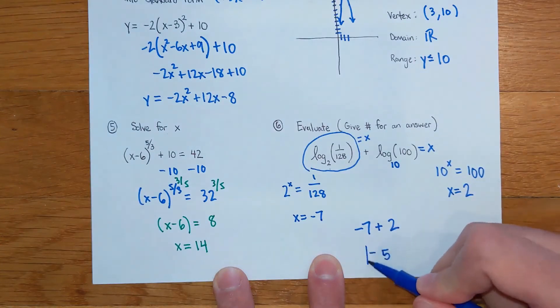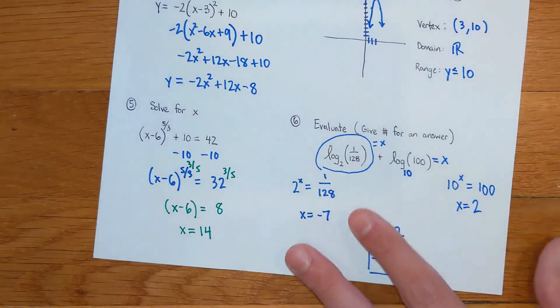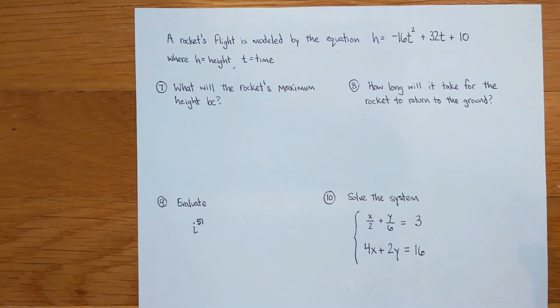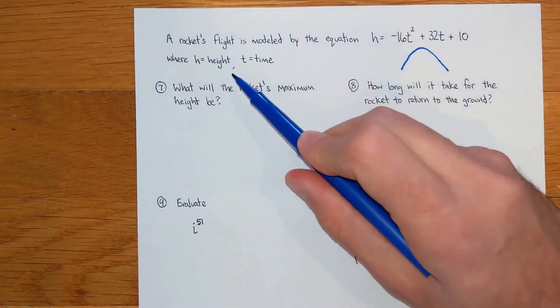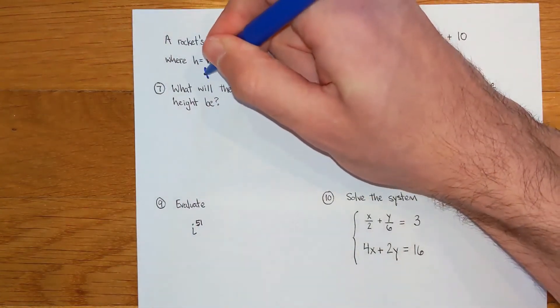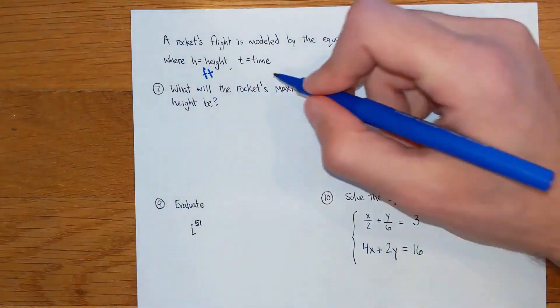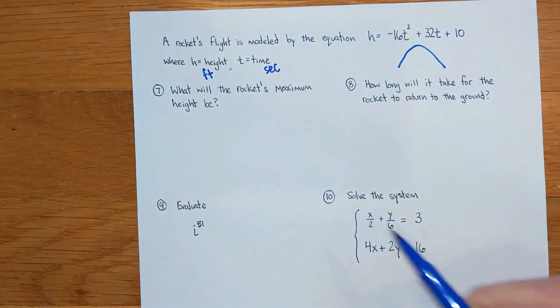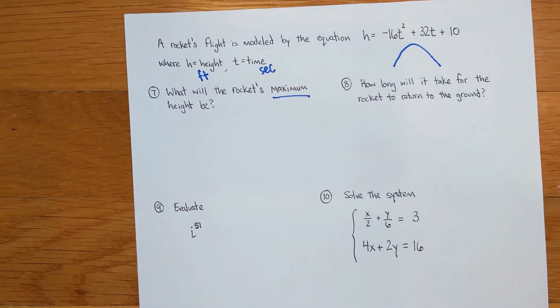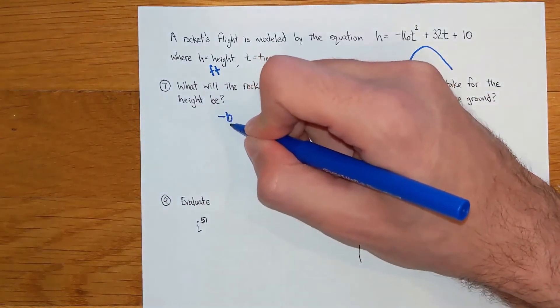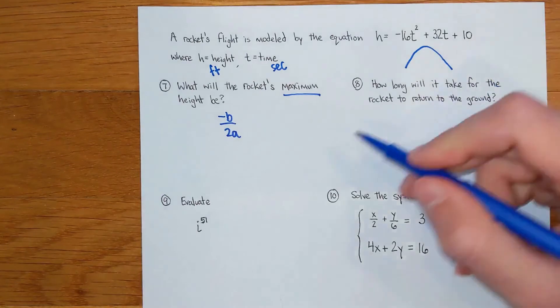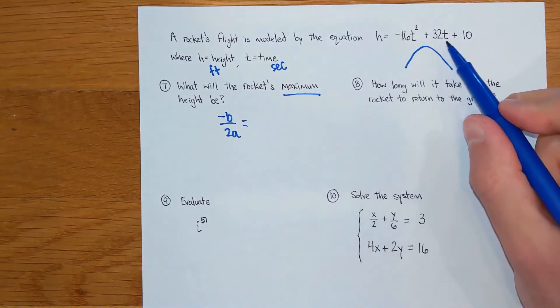All right, moving on to the second page looking at my first problem right here. These are our good old word problems with quadratics. This is an upside down parabola shaped graph and they give us the equation here. h is the height, this is supposed to be in feet, I forgot to give units, and t is time in seconds. First one says what will the rocket's maximum height be. When you see the word maximum you should think vertex. Vertex is negative b over 2a, that is our little formula for the vertex.